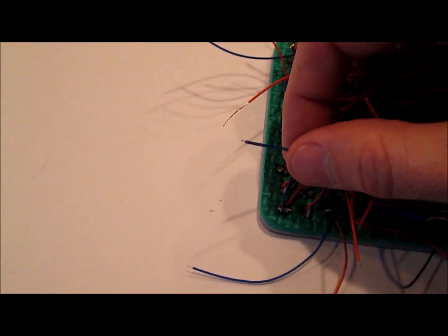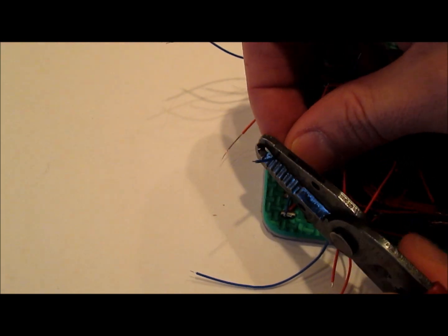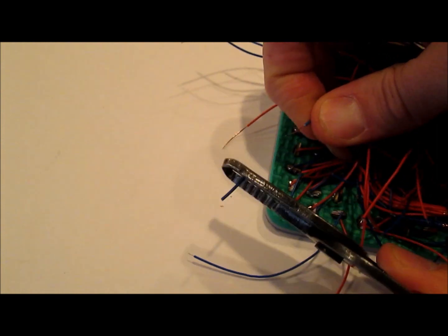Next, we need to take each of these wires and strip it using the smallest hole on the wire strippers to half to 3 quarters of an inch long.